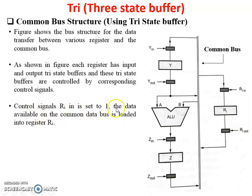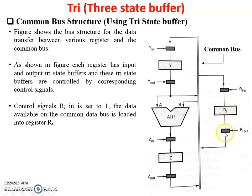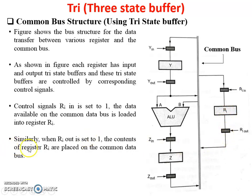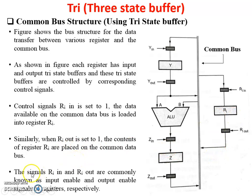When RIIN is set to 1, the data available on the common data bus is loaded into RI. When RIIN equals 1, data comes from the common bus through the tri-state buffer and is loaded into register RI. When RIOUT is 1, the data stored in register RI is loaded onto the common bus system. Similarly, when RIOUT is set to 1, the contents of register RI are placed on the common data bus. So the signals RIIN and RIOUT are commonly known as input enable, or we can say they are control signals.